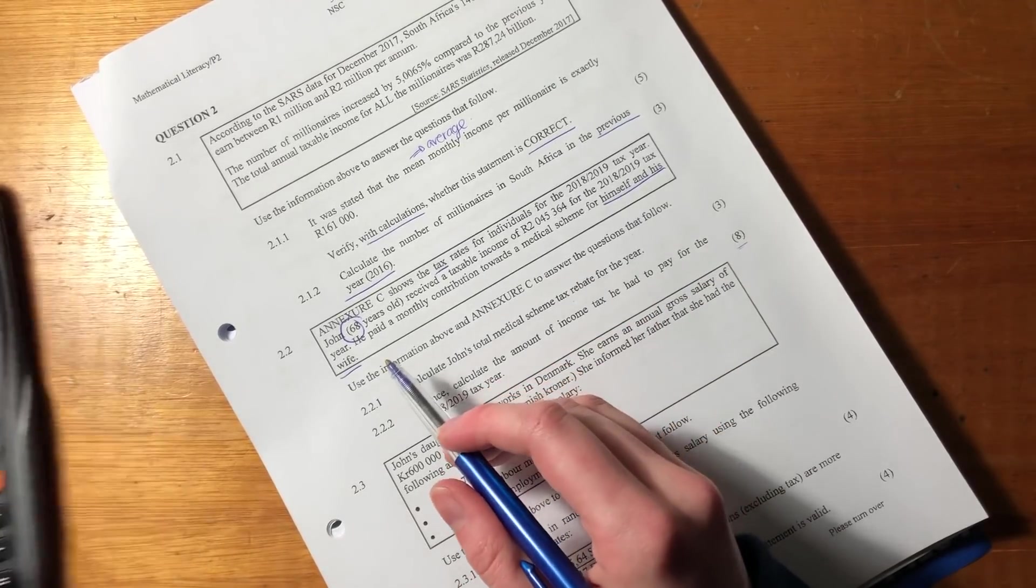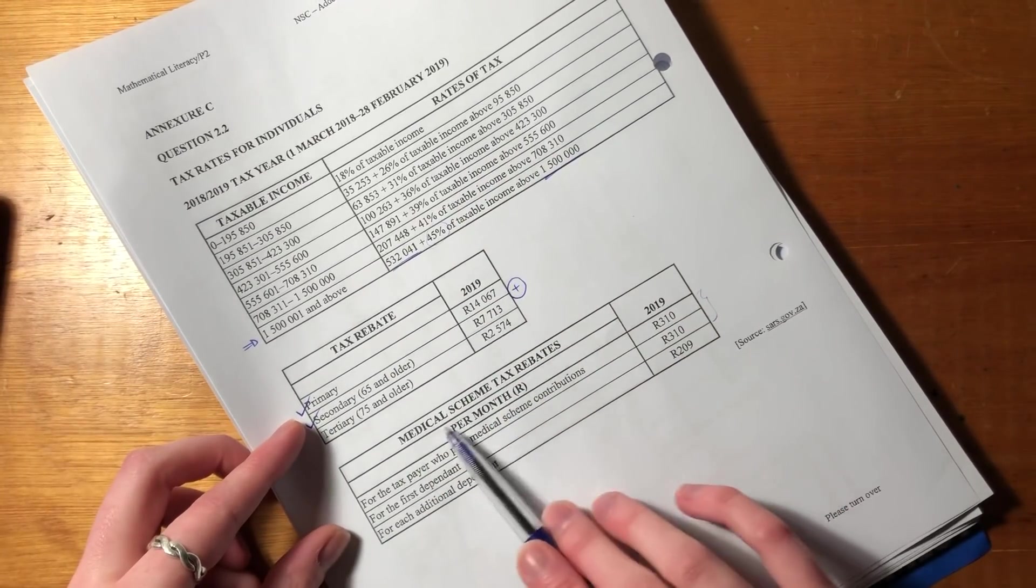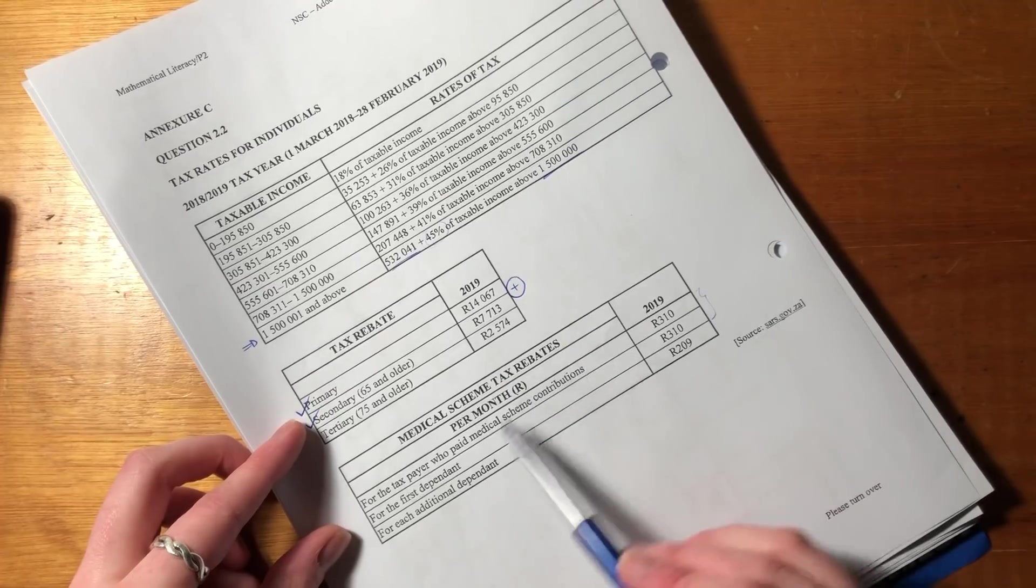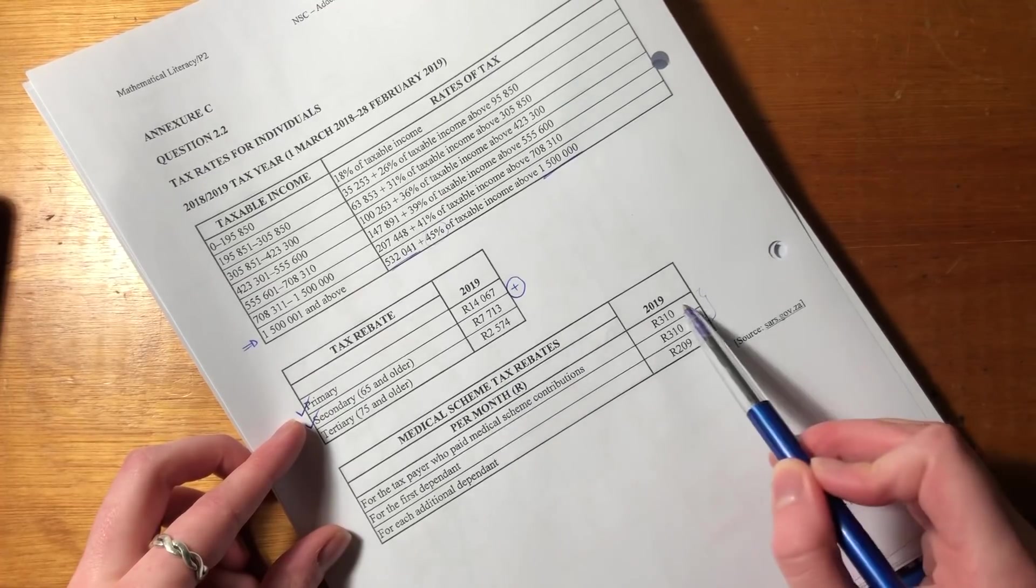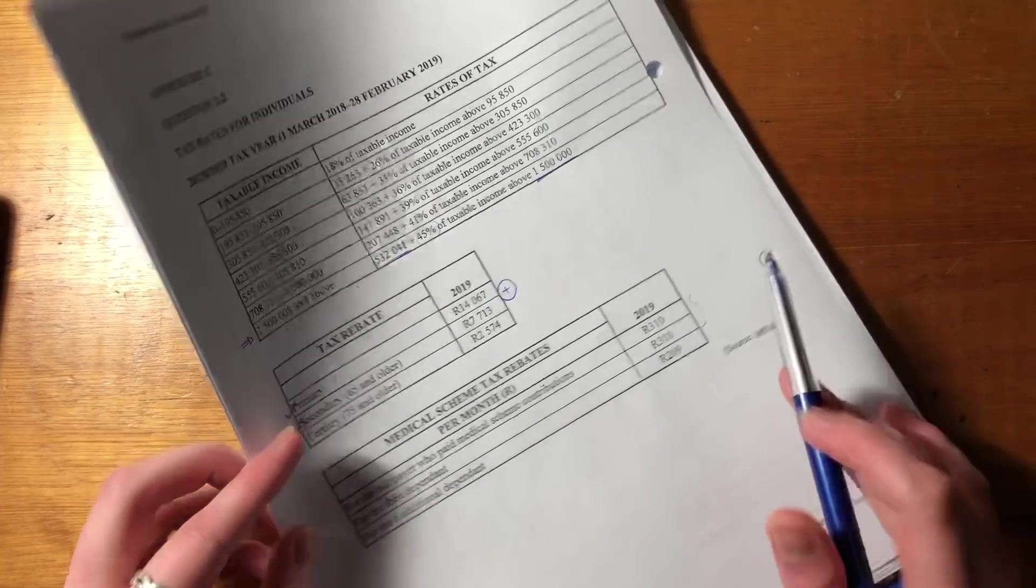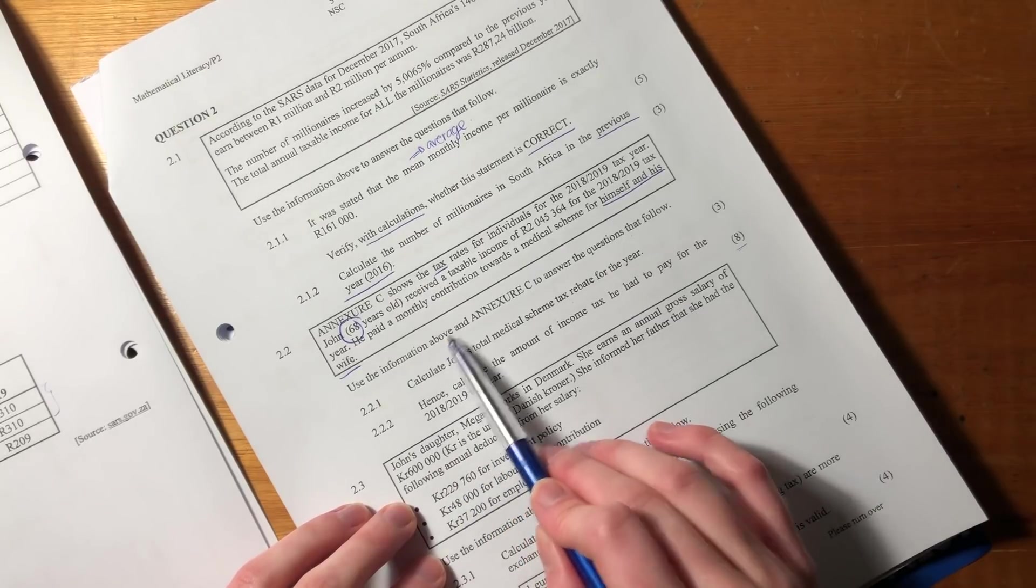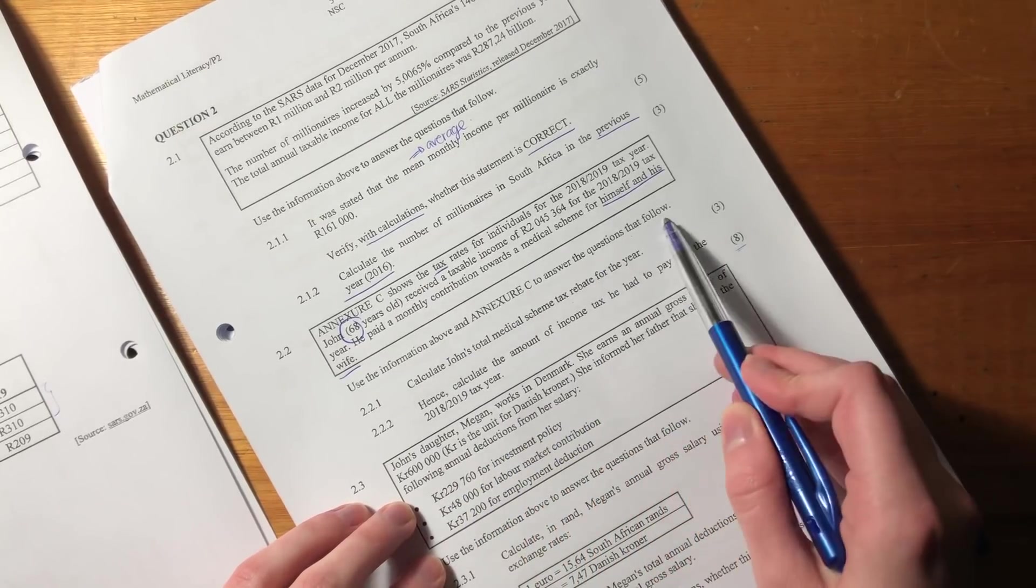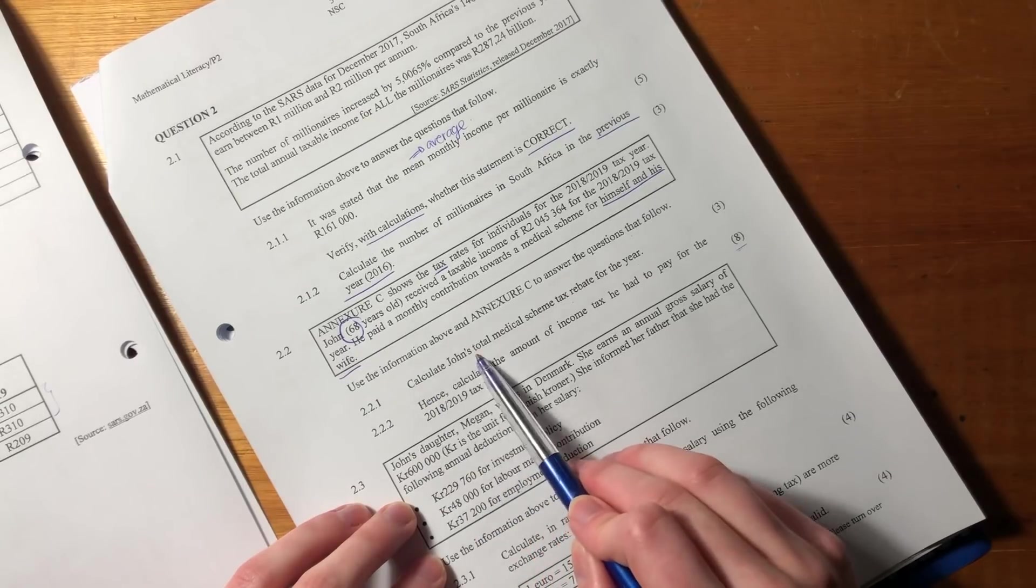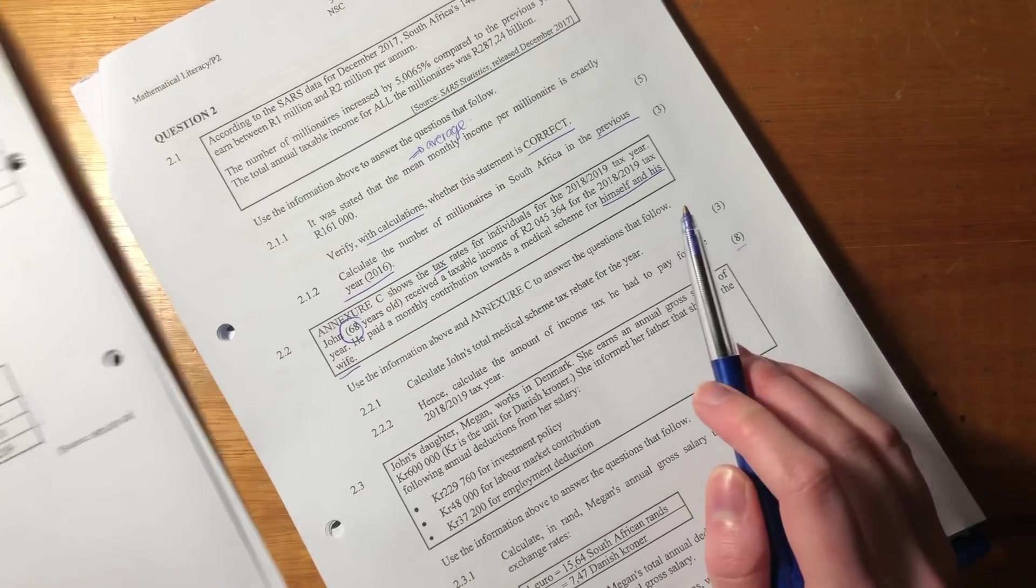So let's see, he has the Annex C, tax tables, rebates and medical scheme tax rebates, important. These are per month. So when we calculate stuff, we're going to have to calculate it by multiplying it by 12. Okay. So it says, use the information above and Annex C to answer the questions that follow. It says, calculate John's total medical scheme tax rebate for the year.